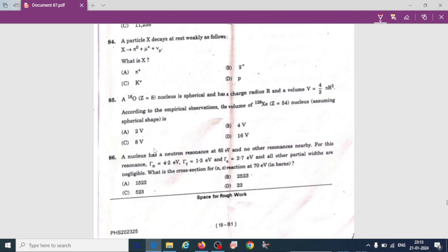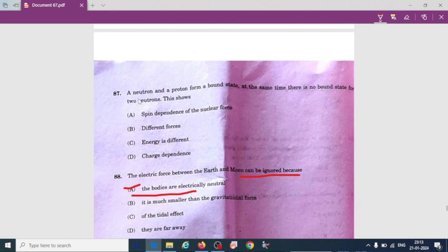A neutron and a proton form a bound state. At the same time there is no bound state for two neutrons. So actually the nuclear force, if we take it, is going to be independent of charge but depends upon spin of the nuclear forces.